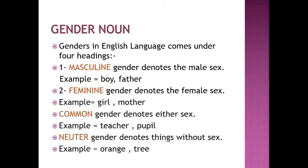Now the new topic: gender nouns. Genders in the English language come under four headings. Number one — masculine gender: denotes the male sex. Example: boy, father. Number two — feminine gender: denotes the female sex. Example: girl, mother. Common gender: denotes either sex. Example: teacher, pupil. Neuter gender: denotes things without sex. Example: orange and tree.